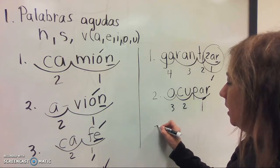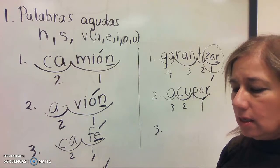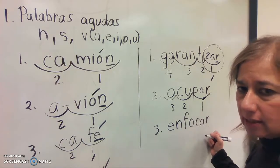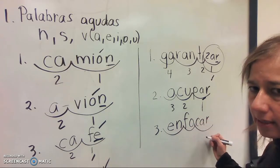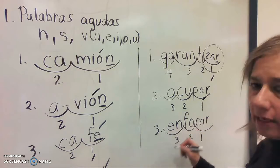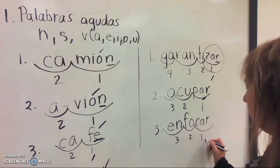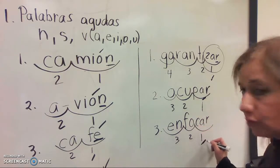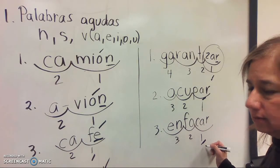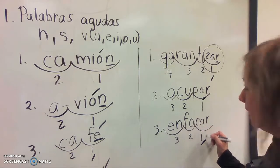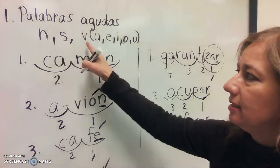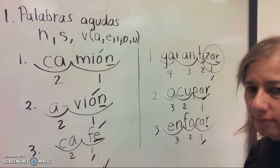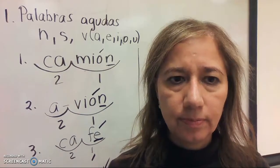Even though it's aguda because the stress is on the last syllable, are you going to write the accent? Does it end in N, S, or a vowel? No — it ends in an R. So that's why you do not write an accent. This is the rule for the agudas.